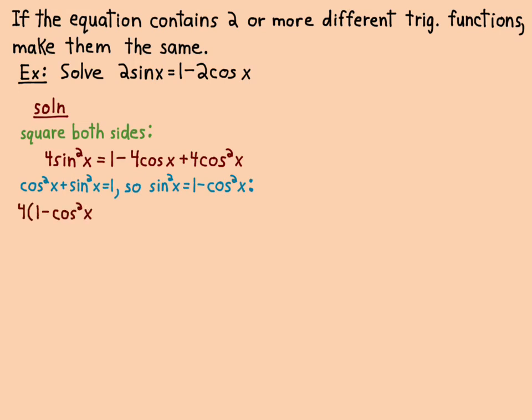I get 4(1 - cos²x) = 1 - 4cos x + 4cos²x. I multiply out the left side and gather everything on one side, probably the right side. So I get 4 - 4cos²x = 1 - 4cos x + 4cos²x.